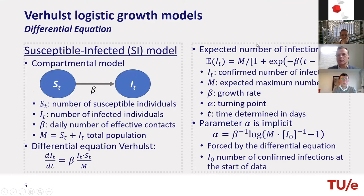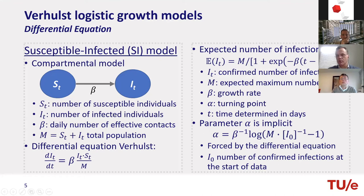The solution is essentially a logistic curve containing three parameters: a maximum value M (which may be unknown and needs to be estimated), a parameter beta (the slope — how fast infections are increasing), and a parameter alpha (a moment in time where the number of infected is halfway to maximum, typically called the turning point). Solving this equation gives an implicit relationship between alpha, beta, and M.